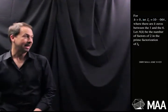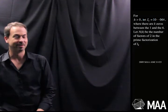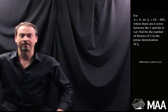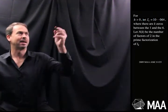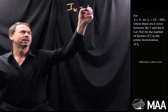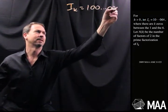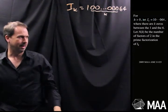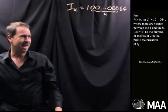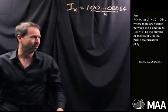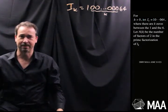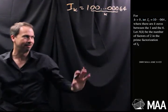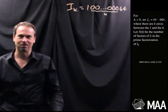For k greater than 0, let i_k equal 100...064, where there are k zeros between the 1 and the 6. So i_k looks like 100...064, where k zeros are in between. Let n_k be the number of factors of 2 in the prime factorization of i_k. I don't know what that's saying, that sounds terrible, that sounds scary. What is the maximum value of n_k?